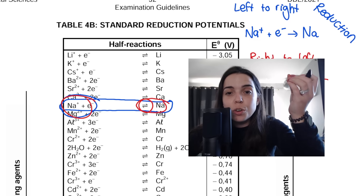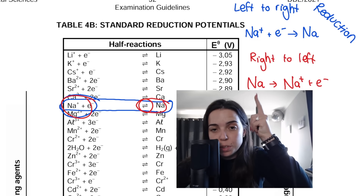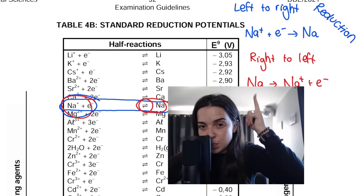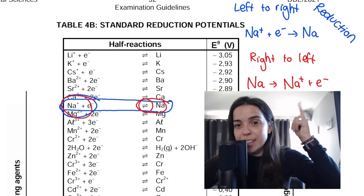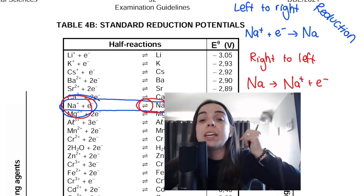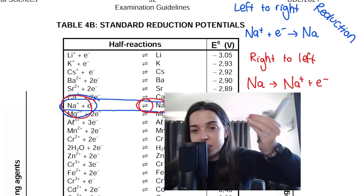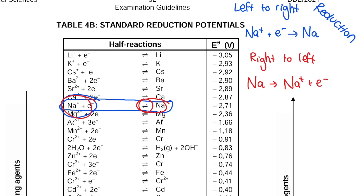If we reverse that — starting with Na, then writing Na+ plus e− — you can see that sodium is losing this electron. Sodium is being oxidized. OIL — oxidation is loss. So this is how you write an oxidation half reaction. If it confuses you which way is oxidation and which is reduction: when the electrons are on the left-hand side it's reduction; when the electrons are on the right-hand side it's oxidation.